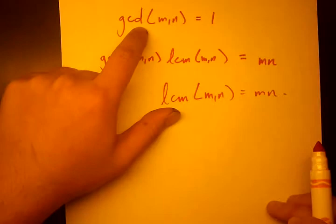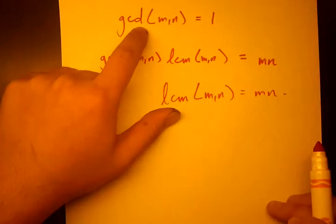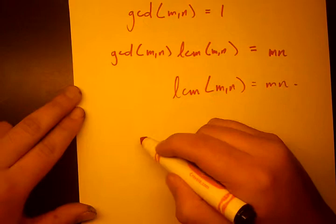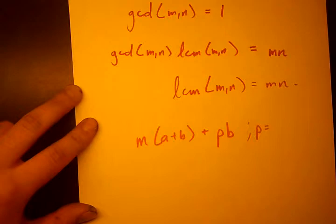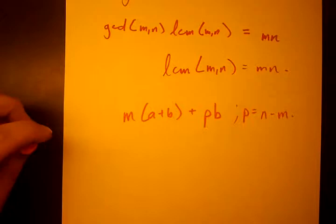So now let's attempt to prove why the GCD has to be 1. So let's take our formula we've been looking at for a long time: M times A plus B plus P times B, where P is equal to N minus M. We've been looking at that for a long time.